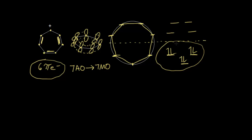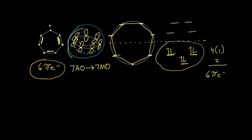That filled configuration gives the extra stability associated with an aromatic ion. With n equal to 1, four times one plus two gives a total of 6 pi electrons. Both criteria have been fulfilled: a ring of continuously overlapping p orbitals, and 4n+2 pi electrons. So the cycloheptatrienyl cation is aromatic — an aromatic cation — and we can expect extra stability associated with it.